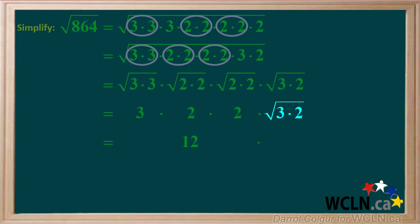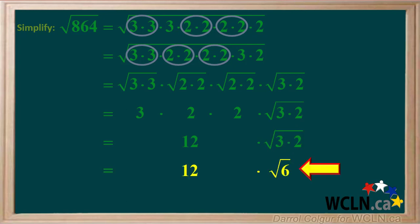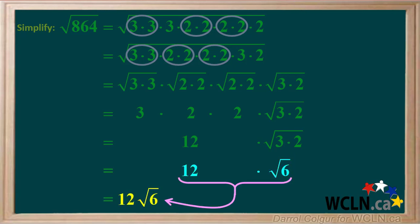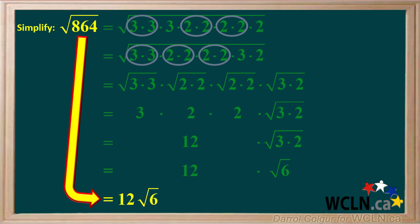And we'll bring down the square root of 3 times 2. So we're left with 12 times the square root of 6, which we can compact to 12 root 6. The square root of 864 is equal to 12 root 6.